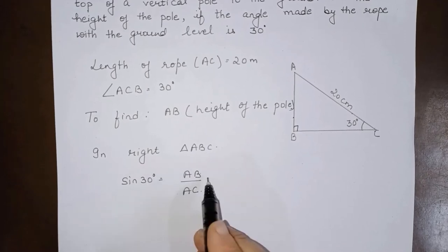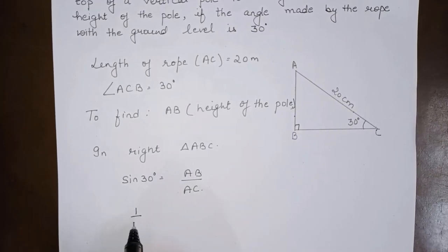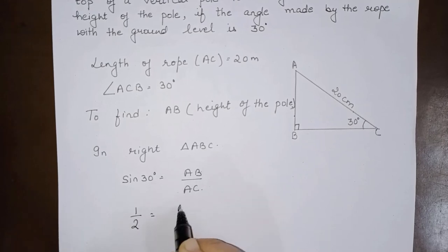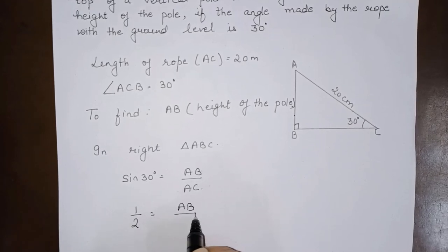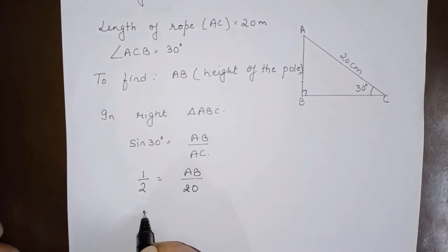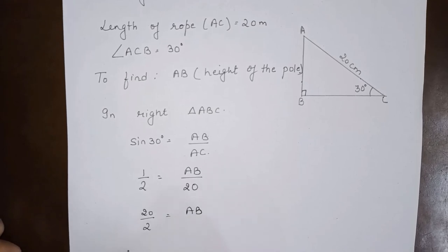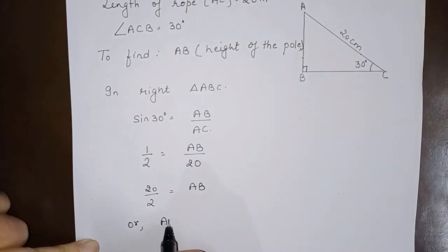So sine of 30 degrees is AB over AC. Now sine of 30 is one-half. AB we have to find, AC is given to be 20, so 20 by 2 is AB, or we can write AB equals 10.